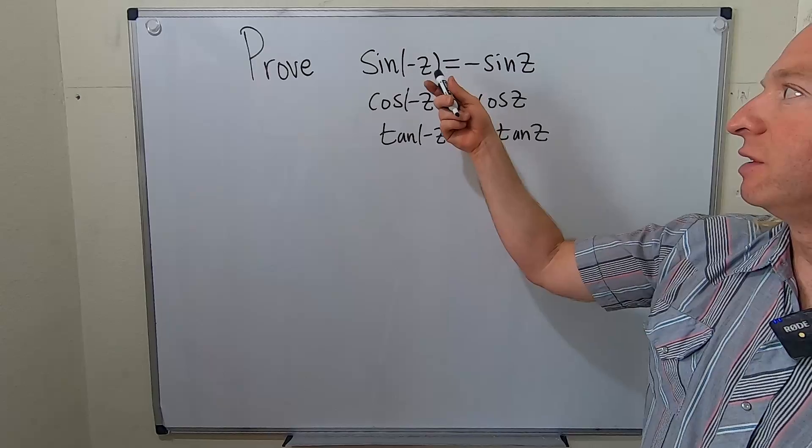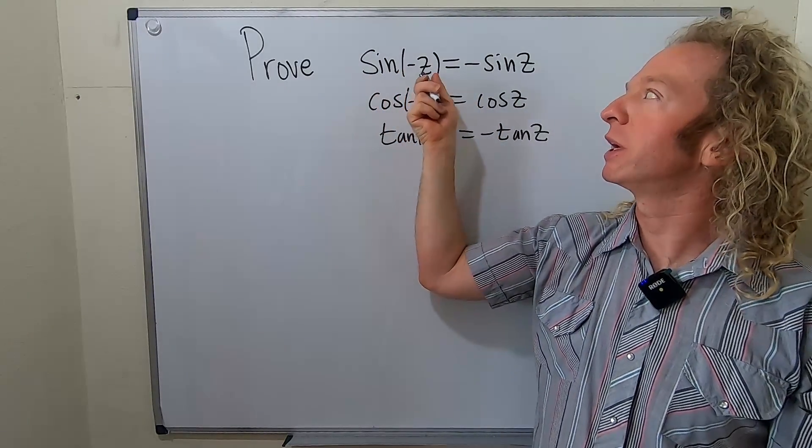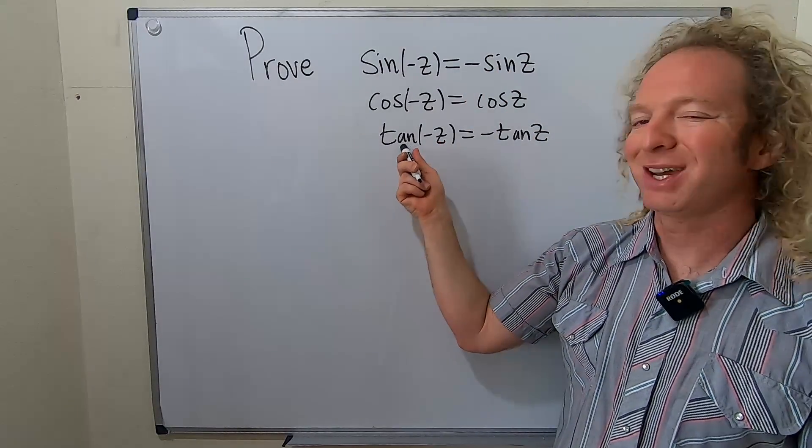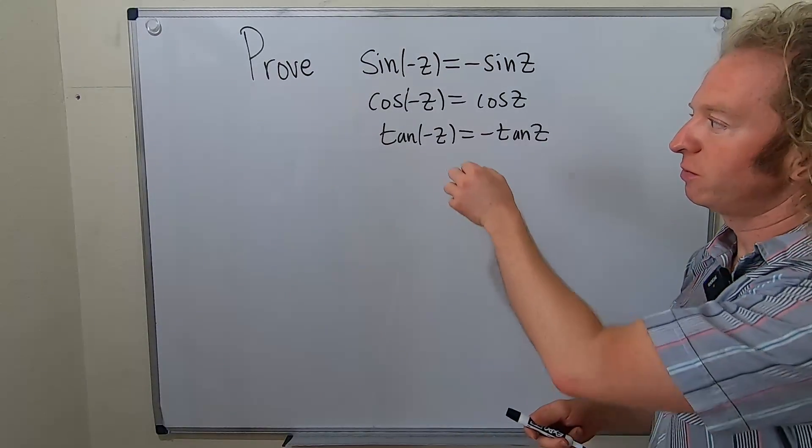The first statement is saying that sine is an odd function. That's what it means for something to be odd - when you plug in a negative z you can pull the negative out. Likewise, this is saying that tangent is odd. That's what it means for a function to be odd.